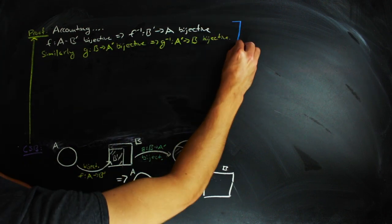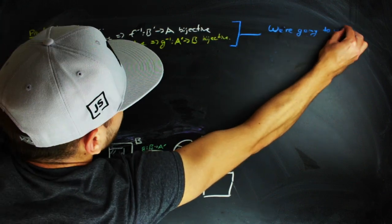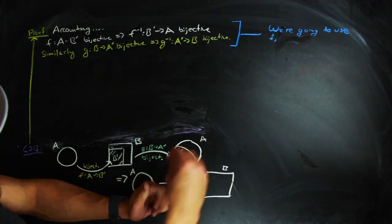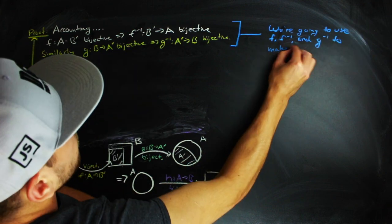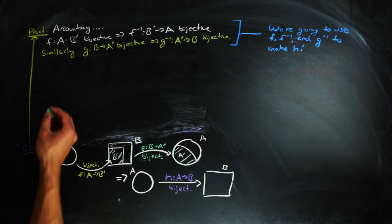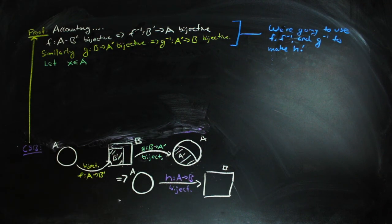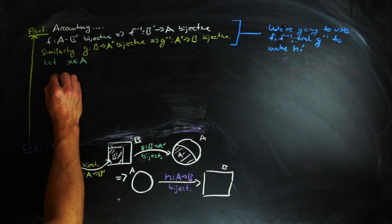Using the bijections F, G inverse, and F inverse, we are going to construct a bijection H from A to B. To do so, let's go ahead and just take some X, choose whichever one you want, in your set A.